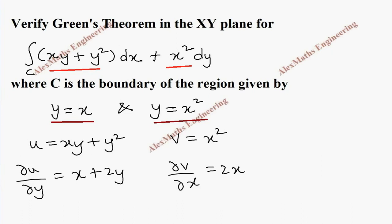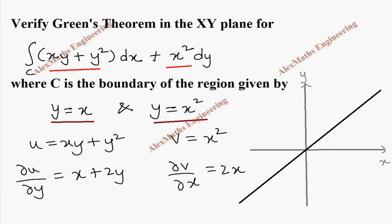Let's take a small diagram. We have horizontal and vertical axes, x and y. y equals x is a line passing through the origin at 45 degrees, and y equals x squared is a parabola opening upward, symmetrical about the y-axis. This is our region, with point O at the origin (0,0) and point A at the other intersection.